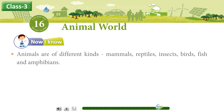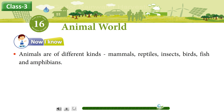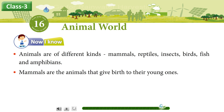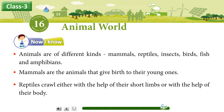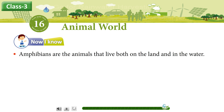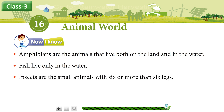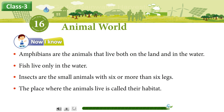Now I know. Animals are of different kinds: mammals, reptiles, insects, birds, fish and amphibians. Mammals are the animals that give birth to their young ones. Reptiles crawl either with the help of their short limbs or with the help of their body. Amphibians are the animals that live both on the land and in the water. Fish live only in the water. Insects are the small animals with six or more than six legs. The place where the animals live is called their habitat.